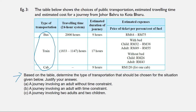Part A: a journey involving an adult without time constraint — meaning he is not rushing. So you don't need to consider the 9-hour options. Go straight to the train at 17 hours and look at the price. With bed, the adult fare is RM49 minimum and RM55 maximum; without bed it is RM43. The difference is only RM6. Therefore, taking a train with bed is the best choice because the price difference is only RM6.